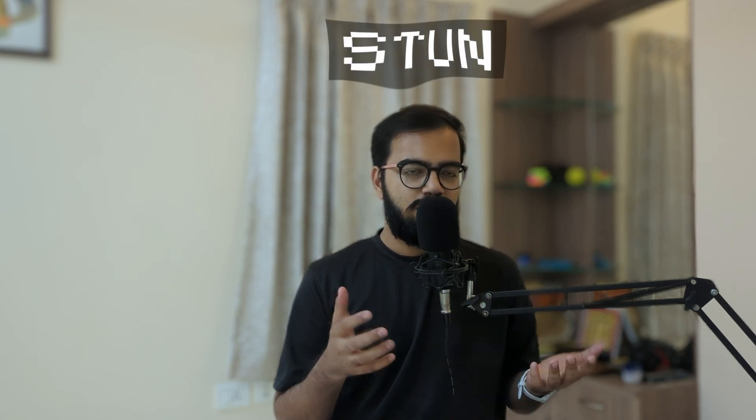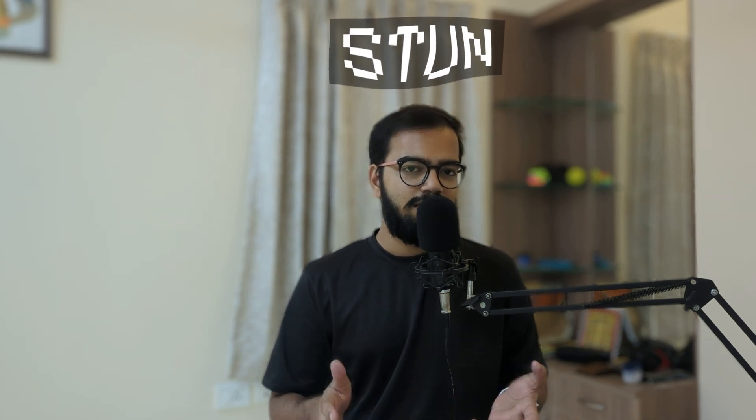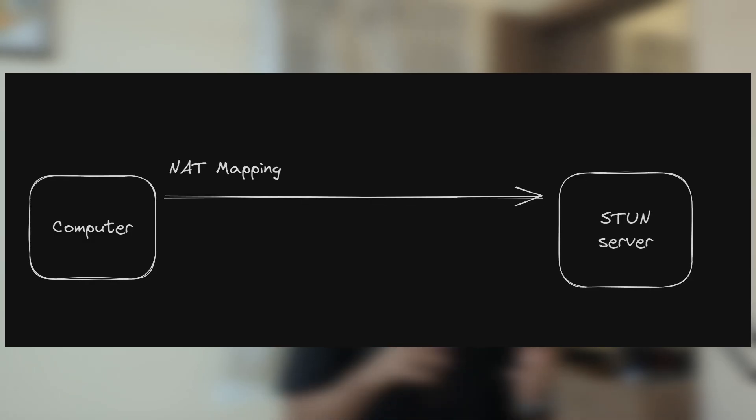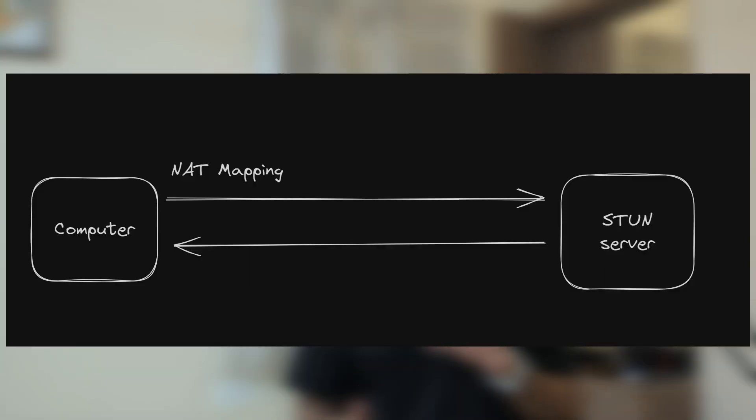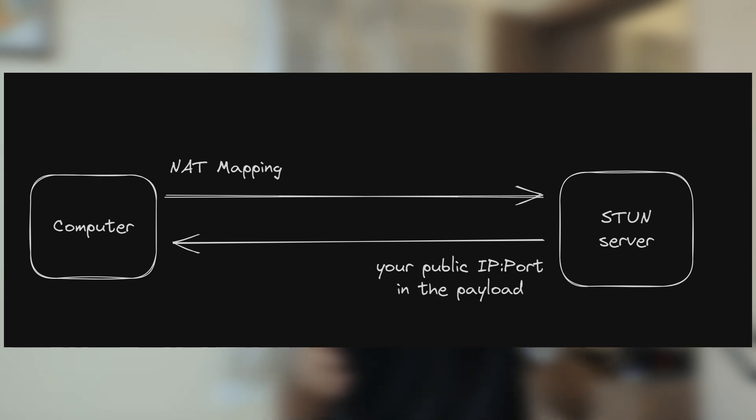The solution is STUN. STUN used to stand for Simple Traversal of User Datagram Protocol through Network Address Translators. These days it's called Session Traversal Utilities for NAT. The functionality of a STUN server is simple: if your computer hits a STUN server, an outbound connection is made, a NAT mapping gets created, and the STUN server can receive the connection and see your public IP-port combination. It sends this data back in the payload of the IP packet — not the header, so your router doesn't replace it — and now you know where others can reach you. That's fundamentally what the STUN protocol is.